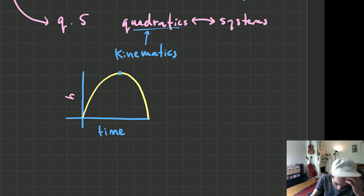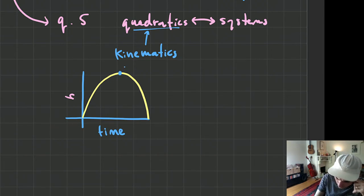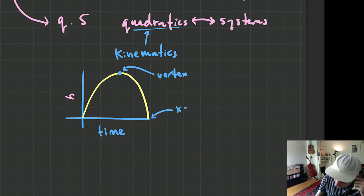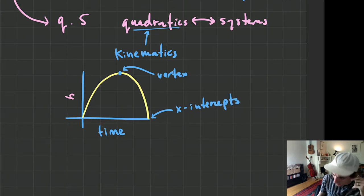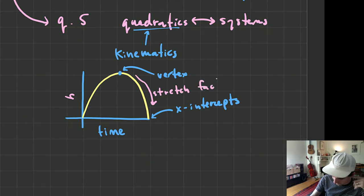If we take a look at a parabola, we know a few things — we know about the vertex, we know about the x-intercepts. But one thing we also know about a parabola is the stretch factor. We usually call that by the letter A.